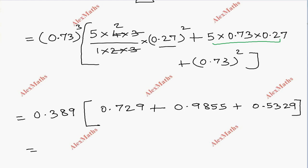So we have 0.389 times the sum. Adding the terms in the bracket: 0.729 plus 0.9855 plus 0.5329. This gives us 0.389 times 2.2474.